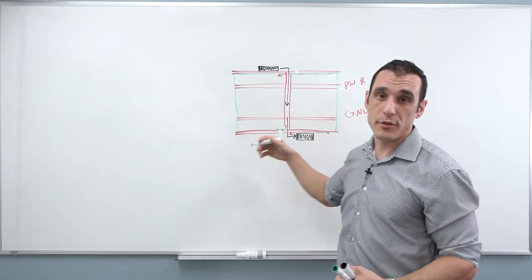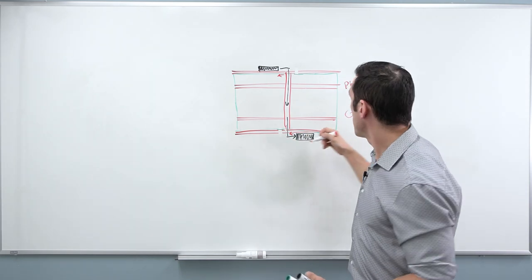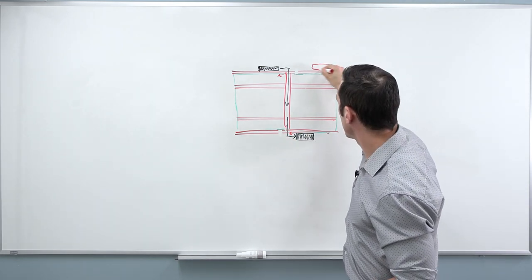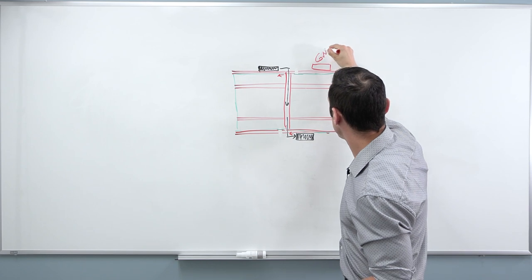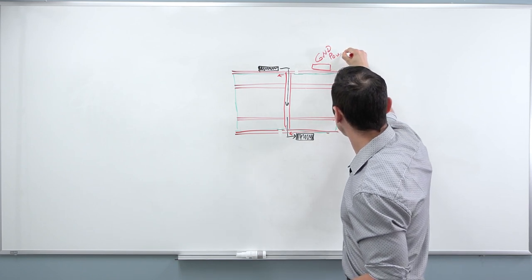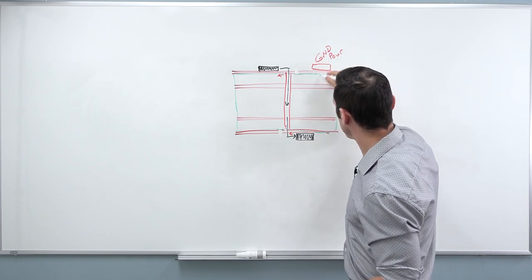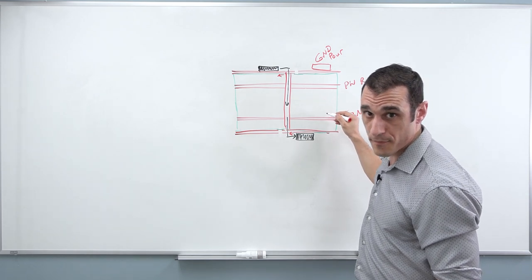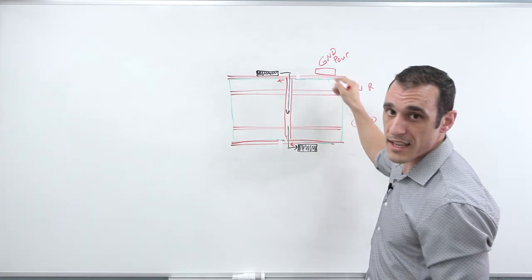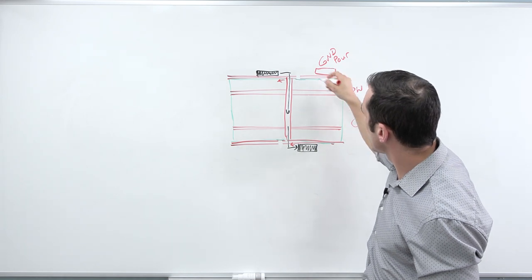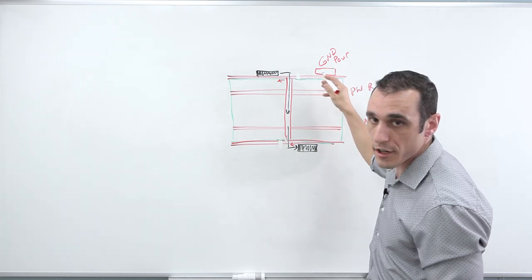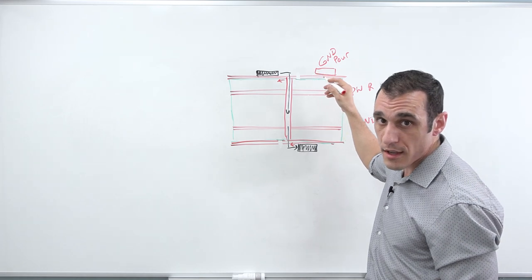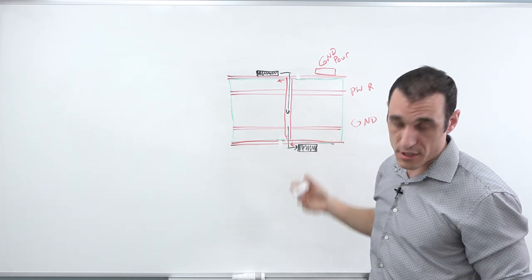The return current could be through the nearest decoupling capacitor, or maybe there's a ground pour on the top layer connected to the ground layer through a via. But the point is you might get a big current loop somewhere in the board, and when you have this big current loop, that creates a potential for EMI.